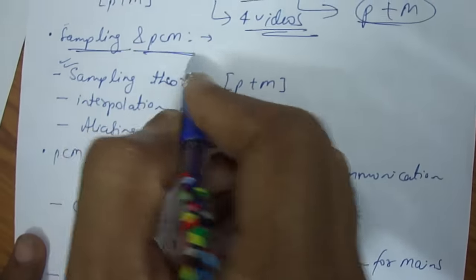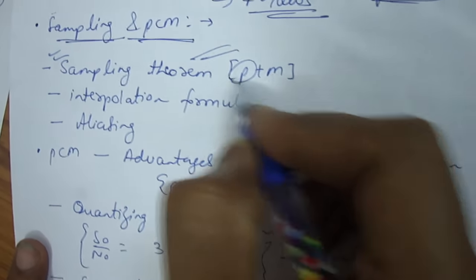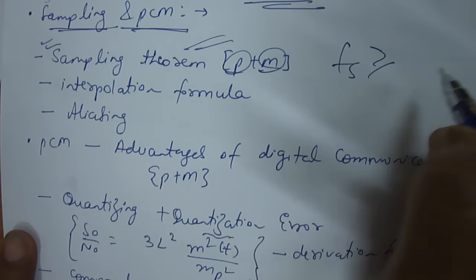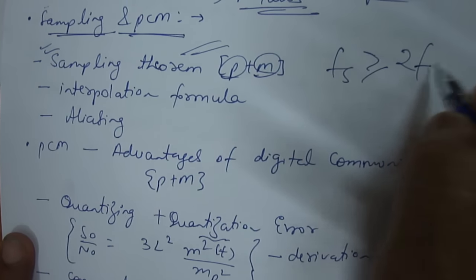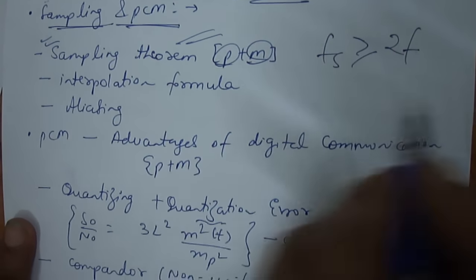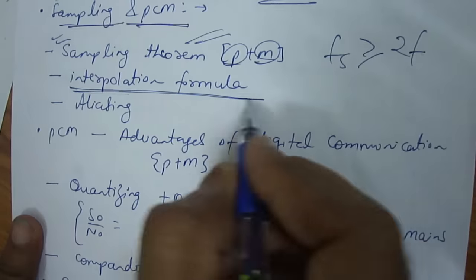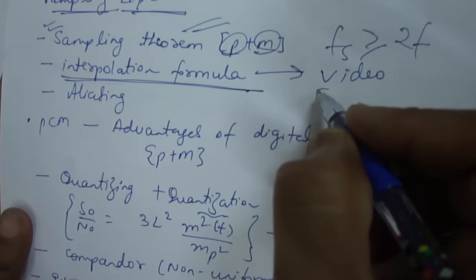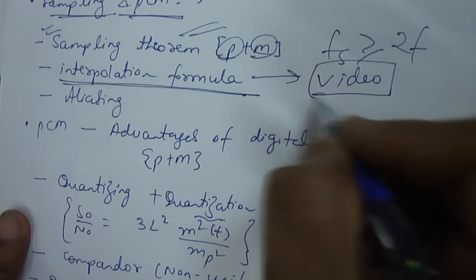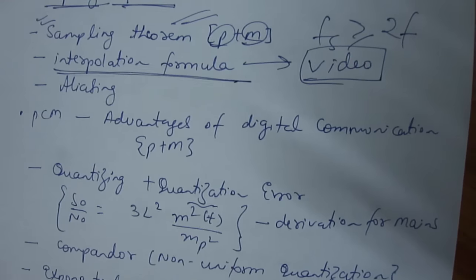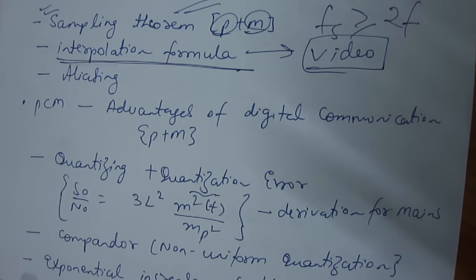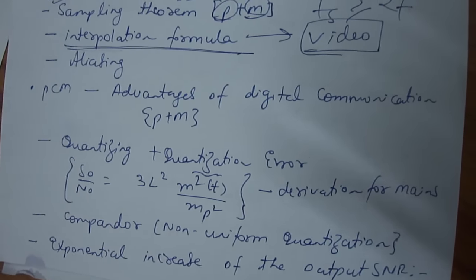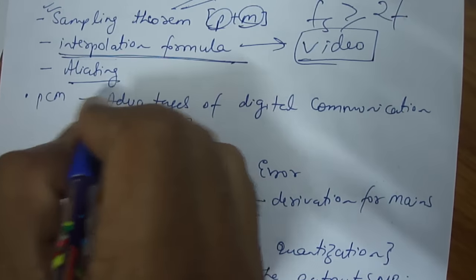Then the last topic: sampling and pulse code modulation. Sampling theorem is important for both prelims and mains — the sampling frequency should be greater than or equal to 2F. What is the interpolation formula? I have explained it in a previous video — how the interpolation formula is derived, what is its Fourier transform, what happens in the time domain, what happens in the frequency domain, and what happens in aliasing.